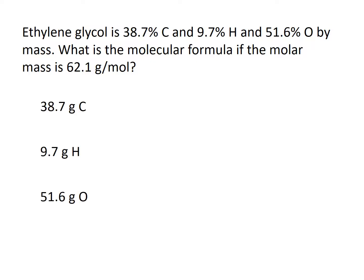For example, 38.7 grams of carbon is what we now have, 9.7 grams of hydrogen, and 51.6 grams of oxygen. The very next thing that we have to do is change the grams to moles, and we can do that by using molar mass from the periodic table. It's always the grams in one mole.